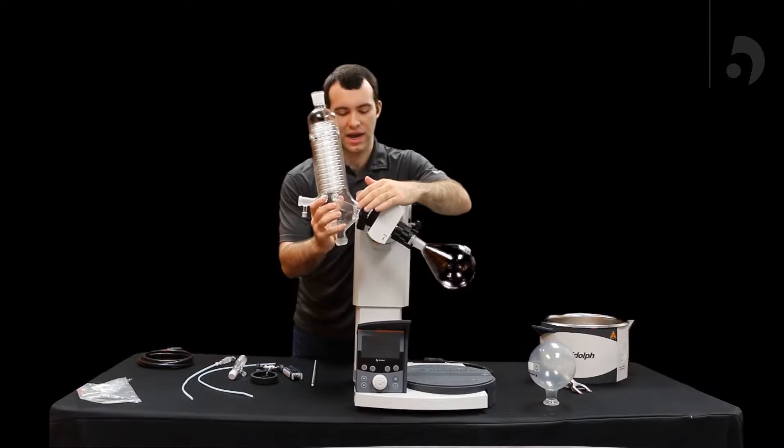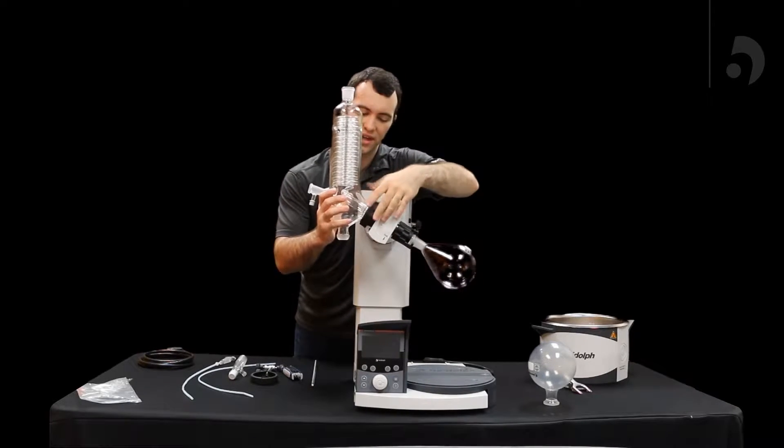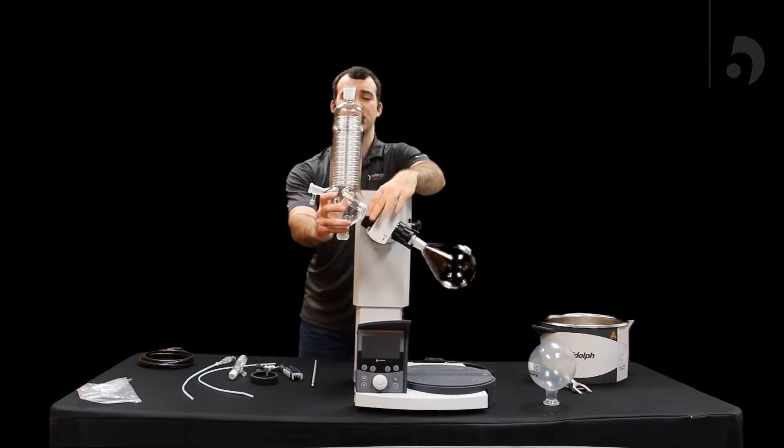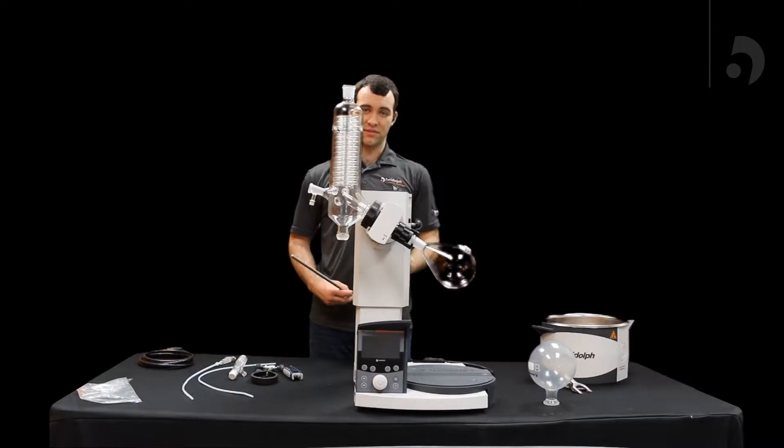Slide that right on over your vapor tube, tighten that screw, and there you have it. Condenser is attached. However, we like to make sure that it is nice and firm.